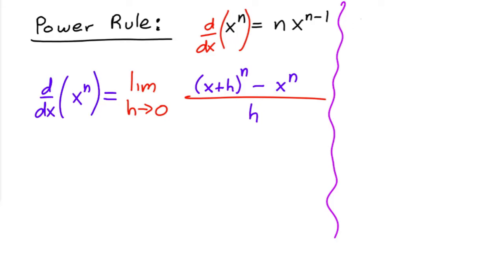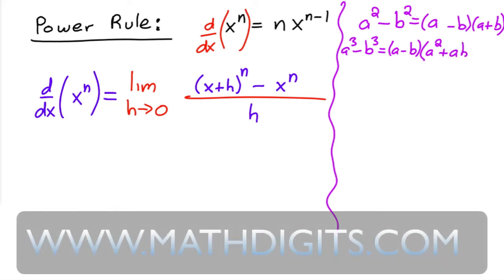Let me write it. For example, you have a squared minus b squared. If you try to factor this you would get a minus b and then a plus b. And then if you remember, you can do the same thing with a cubed. This would be a minus b times a squared plus a b plus b squared.